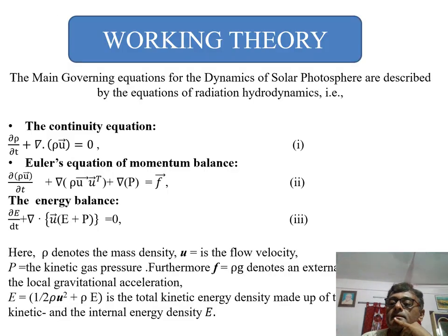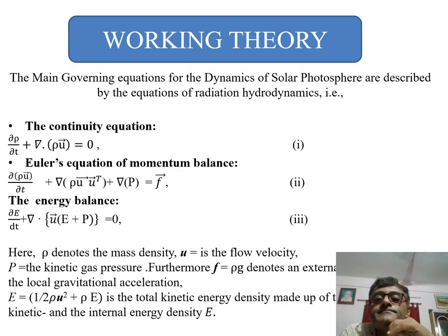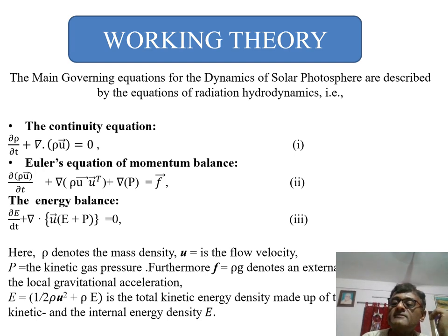Let us see the working theory. The dynamics of solar photosphere are basically described by the equations of radiation hydrodynamics. These radiation hydrodynamics equations are mainly the continuity equation, Euler's equation of momentum balance, and the energy balance. These are the basic equations. We have used these particular equations trying to analyze them, trying to identify if there exists some kind of self-similar solutions. If we can understand for each of the cases we can have the self-similar solution, we can expect that entirely the self-similar solution can be also understood for the proper physical phenomena of the solar photosphere.